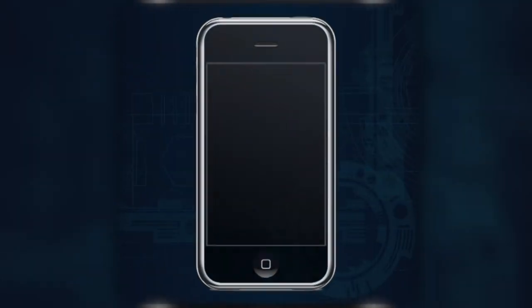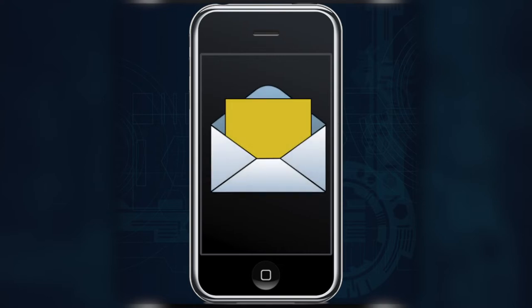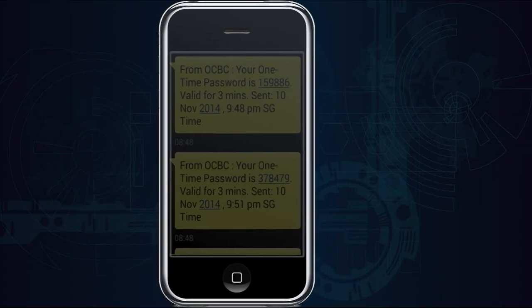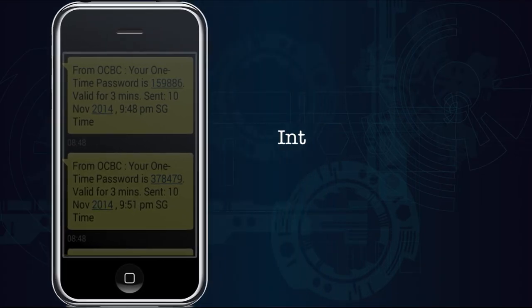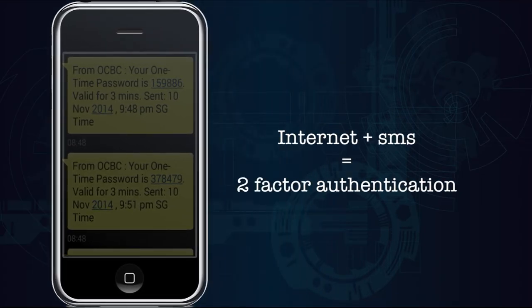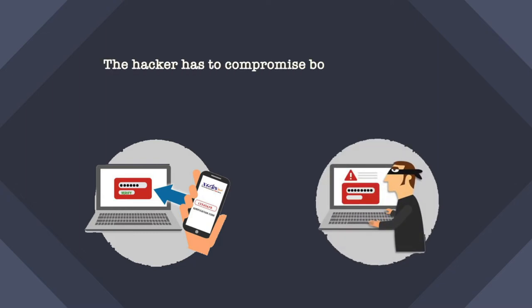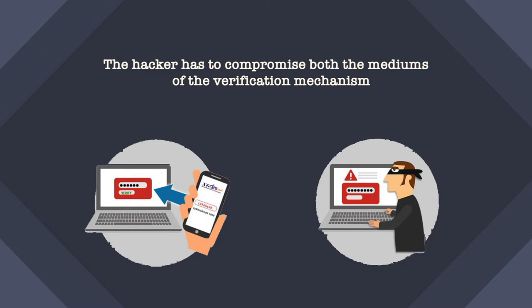Have you ever received an OTP for a transaction — maybe for e-commerce, online banking, or social media login? When it sends you an OTP through SMS, the internet is one medium and SMS is the second medium through which the second factor of verification comes to you. So to hack you individually, the hacker has to compromise both mediums of the verification mechanism.